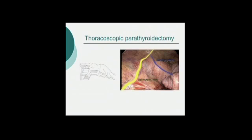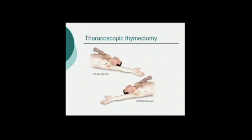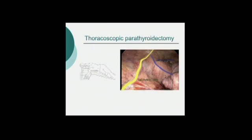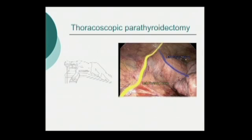For thoracoscopic parathyroidectomy, we place patients in the lateral decubitus position. For aortopulmonary window parathyroid glands, this is essentially just like removing a parathyroid in a focused exploration — you open up the capsule and the tissue overlying it and perform a focused exploration.